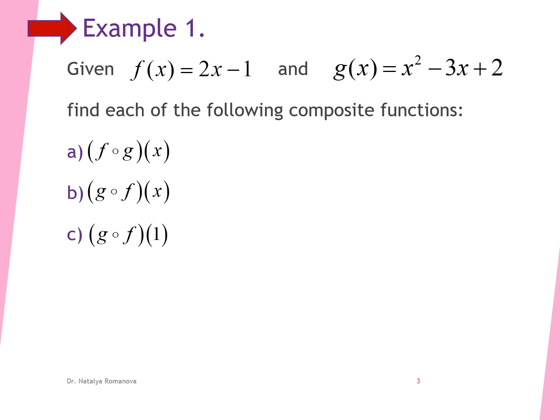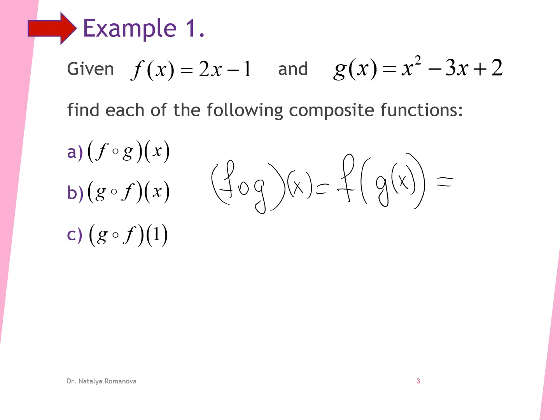In the first example, we have to evaluate the composition of functions where f of x equals x minus 1 and g of x equals x squared minus 3x plus 2. The composition f of g of x starts from our inner function, g of x, which is x squared minus 3x plus 2.